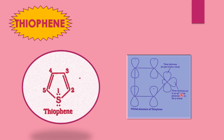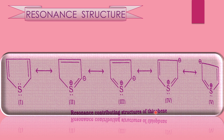These are the sp2 orbitals perpendicular to the p-orbital. This orbital is perpendicular to this p-orbital. You have to write this orbital structure of thiophene. The next point is resonance structure.